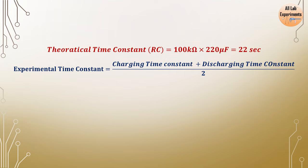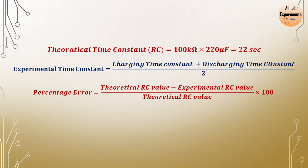So just take a mean of them. In this way we have calculated theoretical and experimental values. And to find the error in this observation you can use this formula.